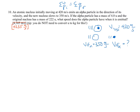What speed does the alpha particle have when it is emitted? That's what we want to find out. We do have some masses: the mass of the nucleus is 222 U, and the mass of the alpha particle is 4.0 U. U is just a unit for mass on the atomic level, but you won't need to worry about converting it.